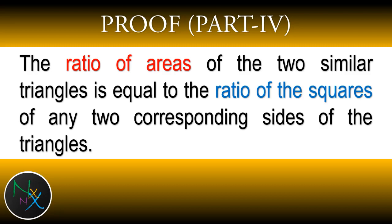Hi guys, welcome to part 4 of the lecture series on properties of similar triangles. In this lecture we are going to prove the area ratio theorem of similar triangles, which is as follows: the ratio of areas of two similar triangles is equal to the ratio of the squares of any two corresponding sides of the triangles.